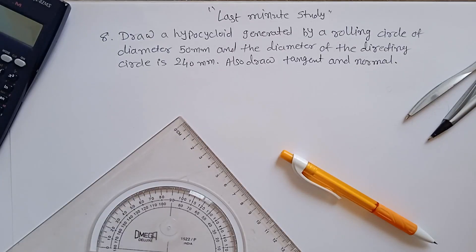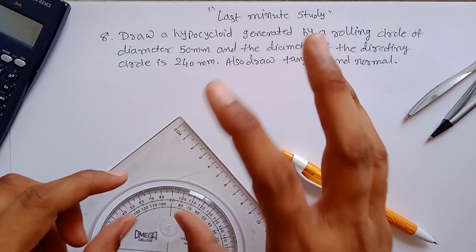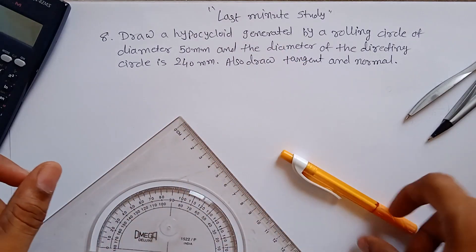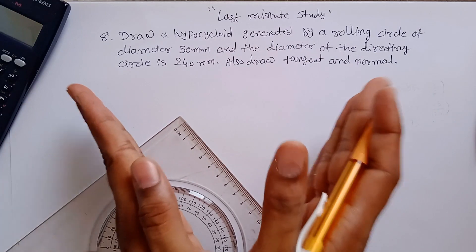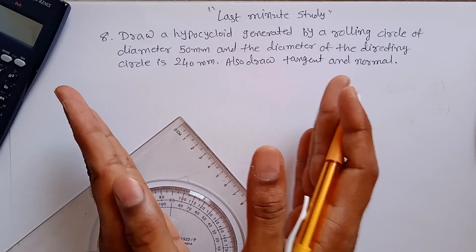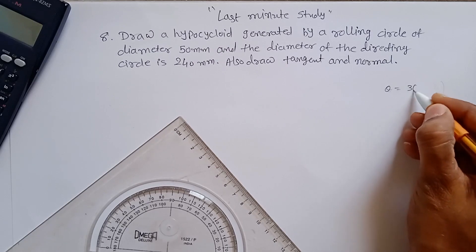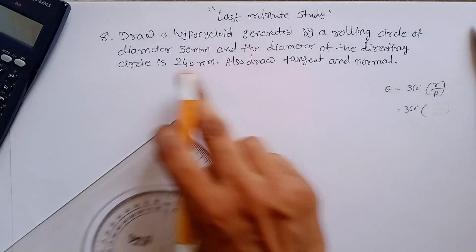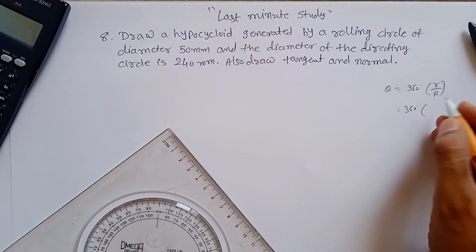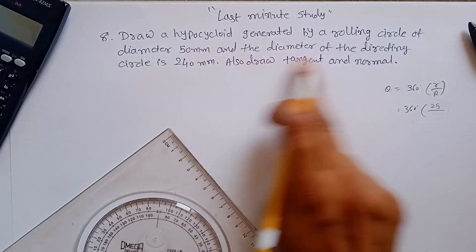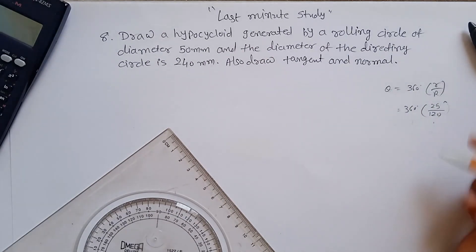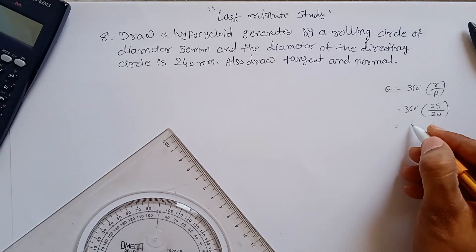Problem number eight from engineering curves sheet is a hypocycloid. In a hypocycloid, the rolling circle rolls on the inside of the directing circle. First, you have to identify the limit of the rolling circle. The equation is theta equals 360 times small r divided by capital R. Here, small r (rolling circle radius) is 25 mm and capital R (directing circle radius) is 120 mm.